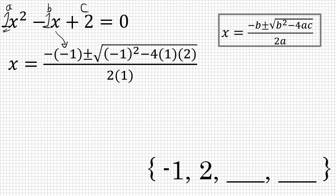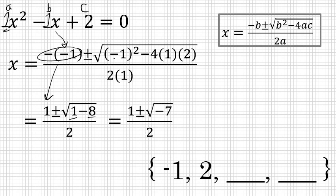You can do some simplifying here. The opposite of negative 1 is positive 1. Under the radical sign, under the square root sign, negative 1 squared is 1, and 4 times 1 times 2 is 8. The difference, 1 minus 8, is negative 7. So this becomes 1 plus or minus the square root of negative 7, all over 2. Square root of negative 7 is an imaginary number, so let's take out an imaginary factor of i.